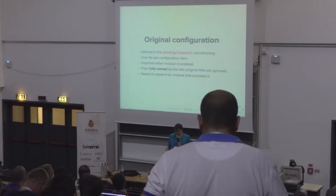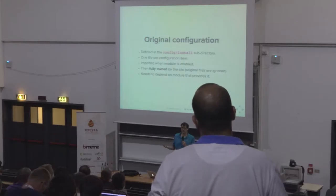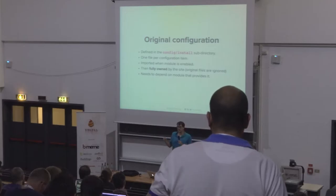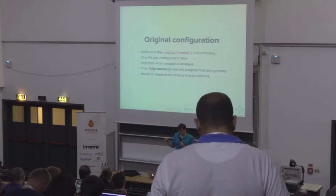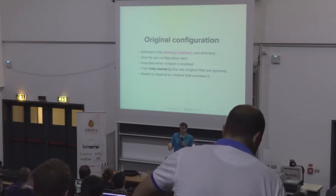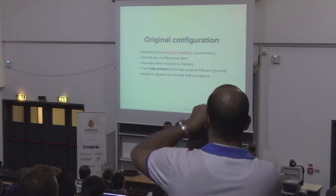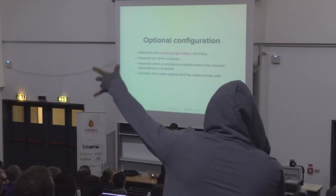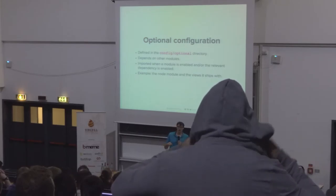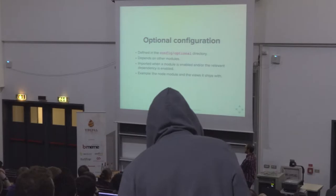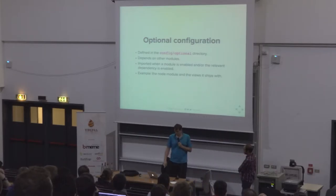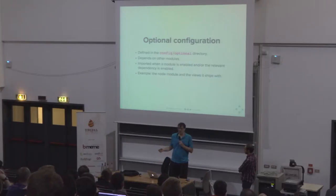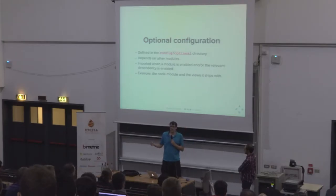An important part is that configuration needs to depend on the module that provides it, because it will not get deleted when you uninstall the module. If you have configuration in config/install that doesn't depend on the module, when you uninstall and reinstall the module it will not work. For that there is optional configuration in config/optional — it gets installed when all the dependencies of the configuration are met. For example, the node module comes with a view, but the node module doesn't depend on views. When the views module is enabled, the view from the node module gets enabled too.